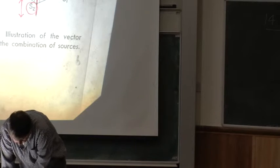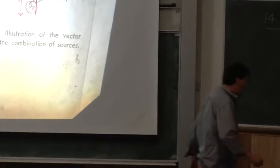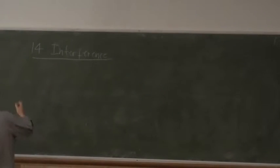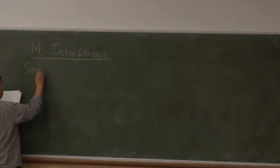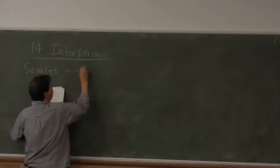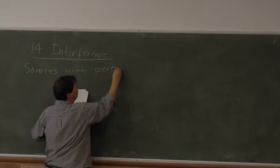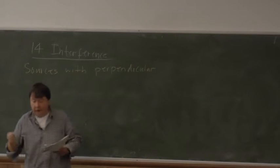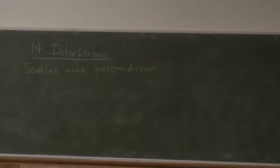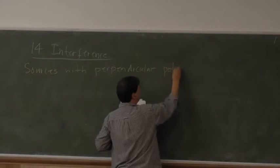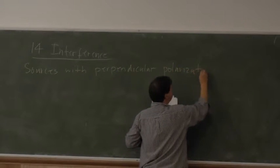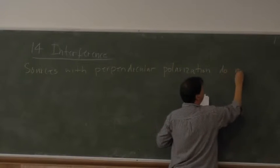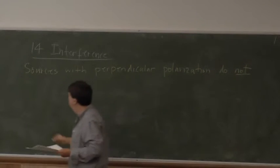I'll make a board note on that because it's not in the lecture notes for this lecture: sources with perpendicular polarization — in other words the polarization of one is on the y-axis, the other on the z-axis, and they travel out in the x-direction — sources with perpendicular polarization do not, emphatically do not, interfere with each other.